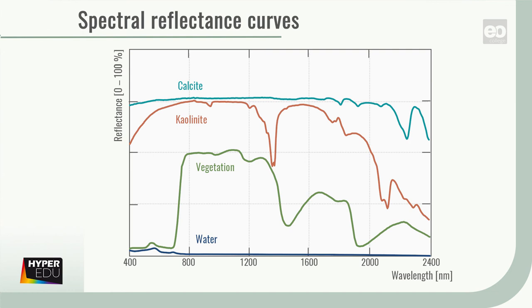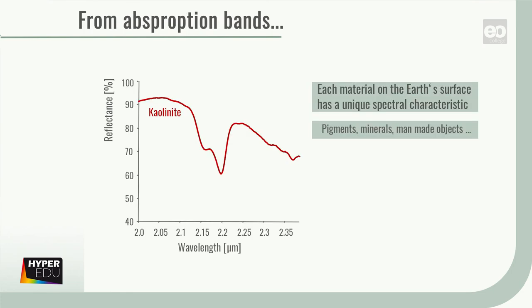Because of these differences, many materials of the Earth's surface can be identified by analyzing their spectral reflectance signatures. These signatures can be represented in so-called spectral reflectance curves as a function of wavelength, whereas the wavelength is indicated on the x-axis and the intensity of reflectance on the y-axis. Here, you can see typical spectral reflectance curves of green vegetation, coastal water, and two minerals, kaolinite and calcite.